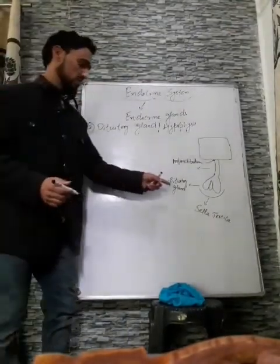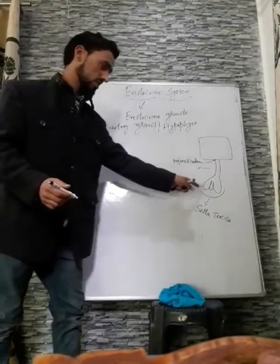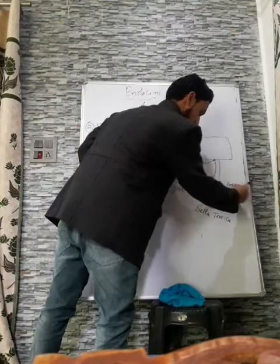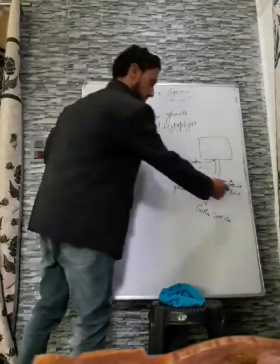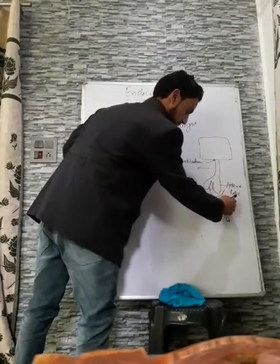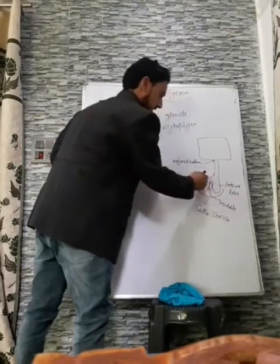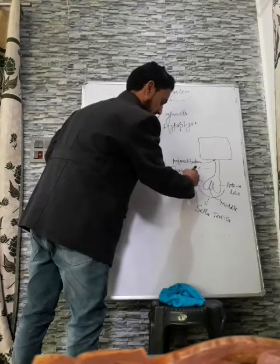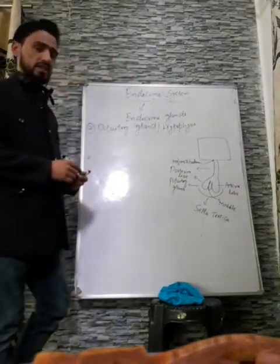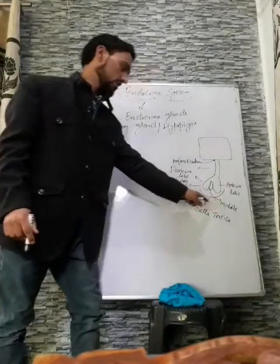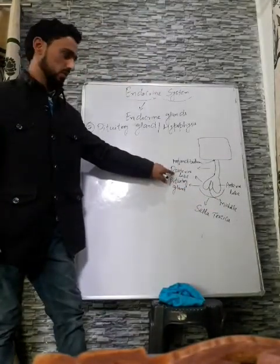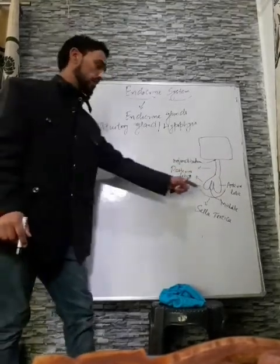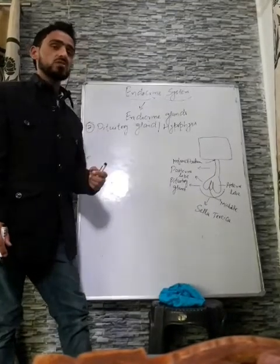Regarding the structure of the pituitary gland: it is a trilobal structure — meaning it has three lobes or chambers. The first lobe is the anterior lobe, the second is the middle lobe, and the third is the posterior lobe. All three lobes secrete a number of hormones: the anterior lobe secretes its hormones, the middle lobe secretes its hormones, and the posterior lobe also secretes its hormones.